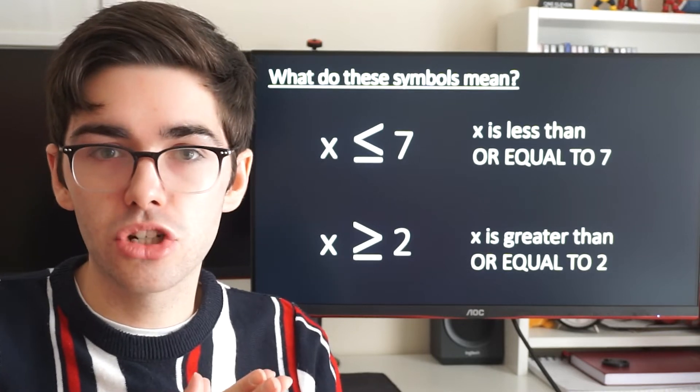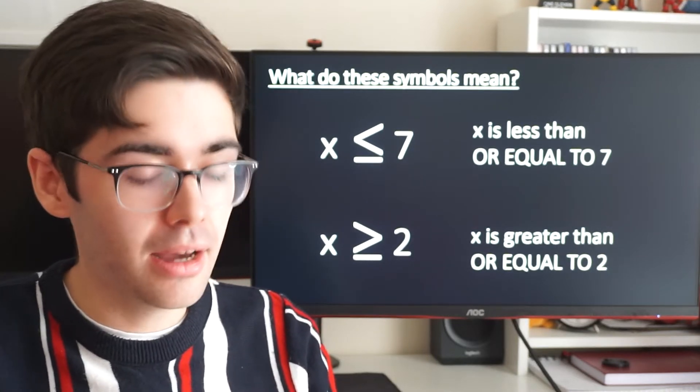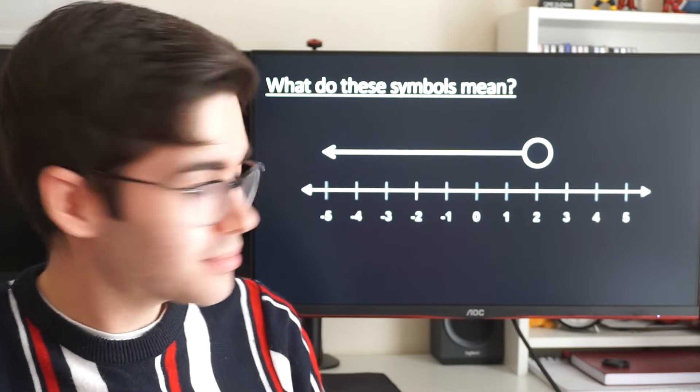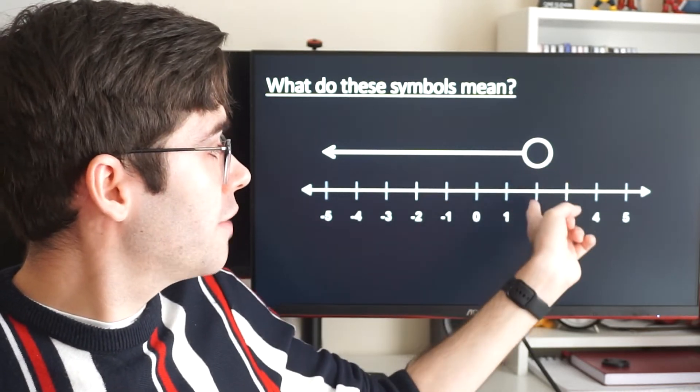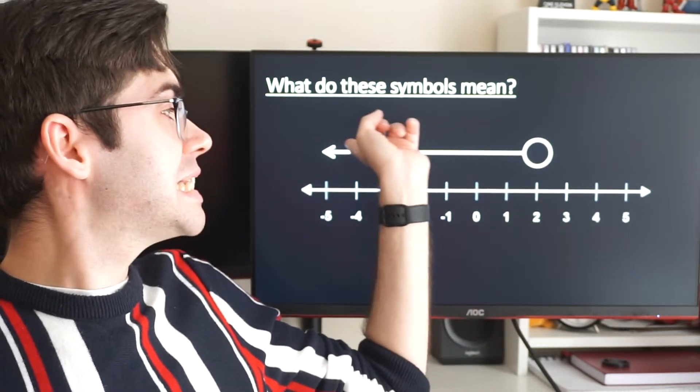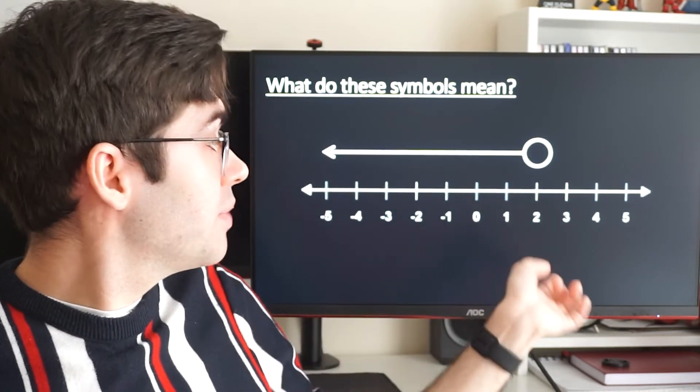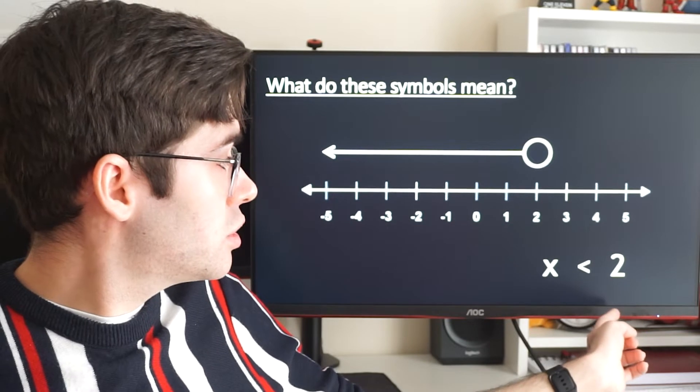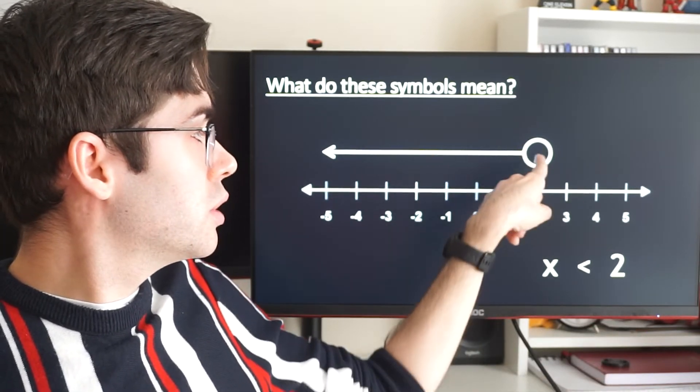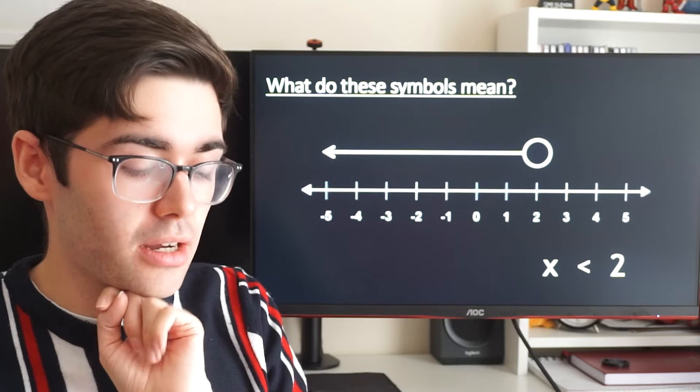The other thing we can do to show inequalities is draw them on a number line, and they might look like this. We've got this empty circle over two and an arrow going down, pointing at all the numbers less than two. So this is x is less than two. It's pointing at all numbers less than two, not including two because it's an empty circle.